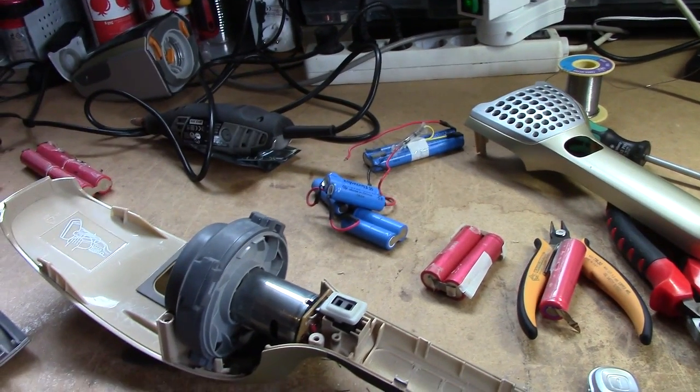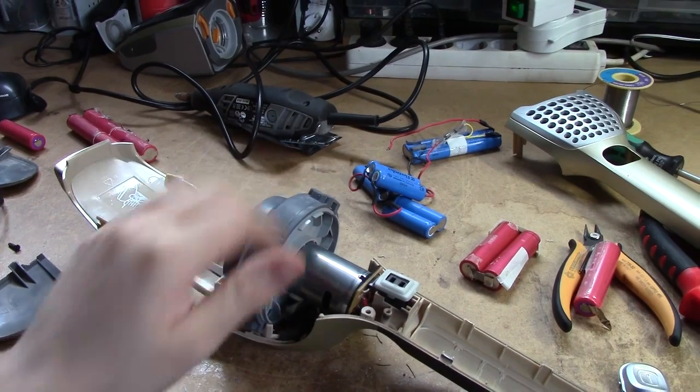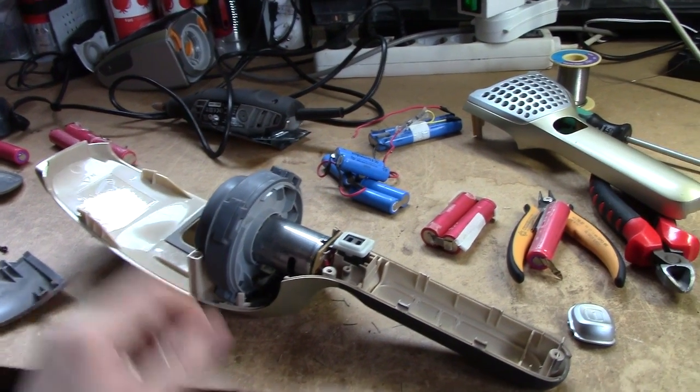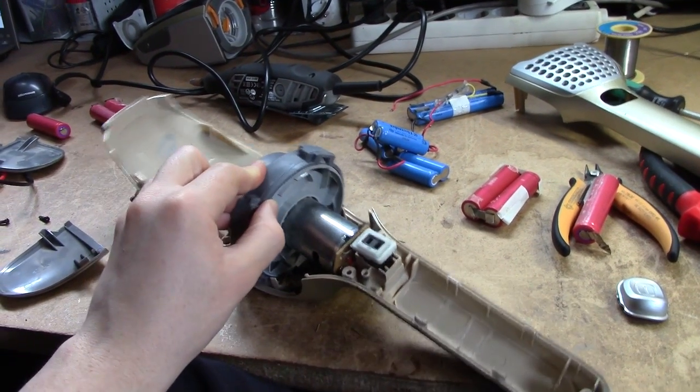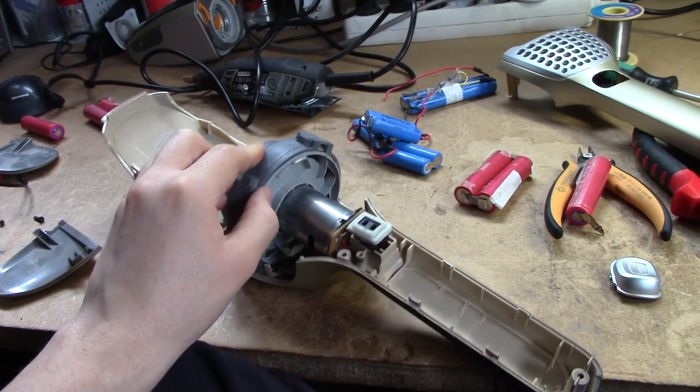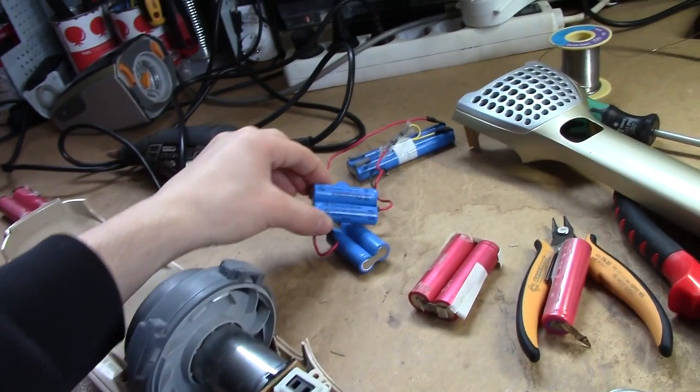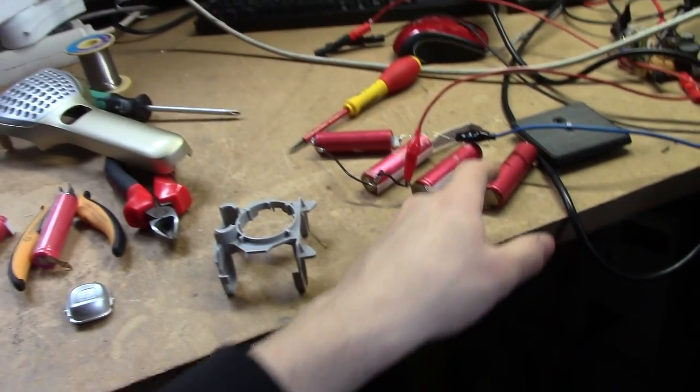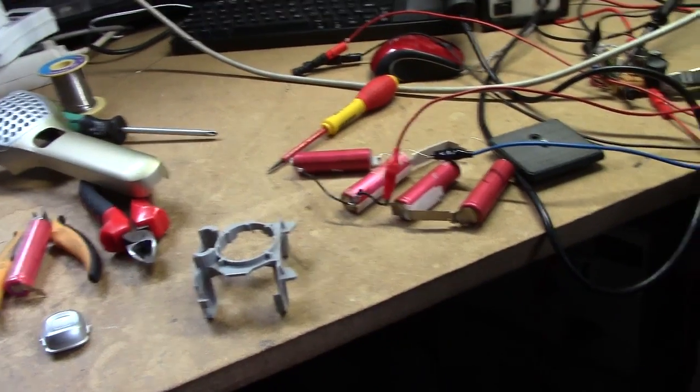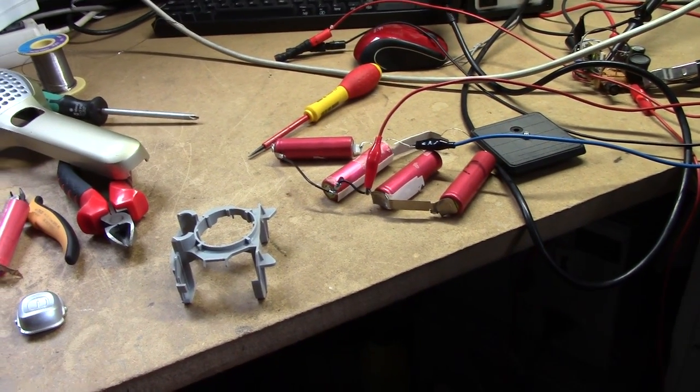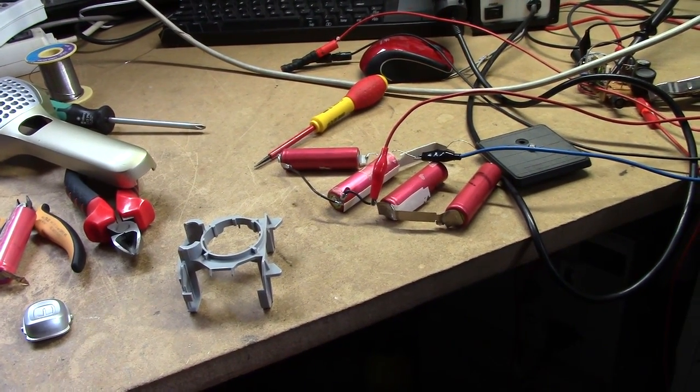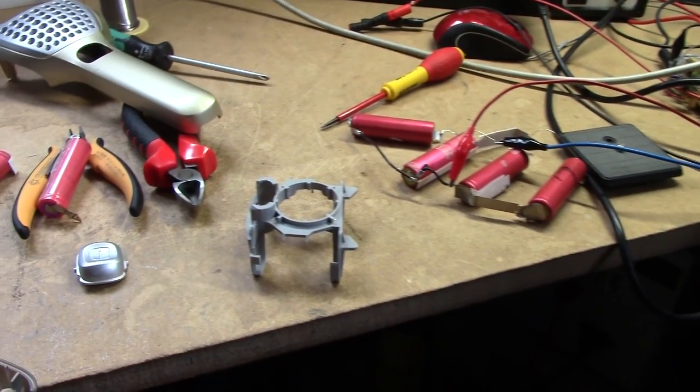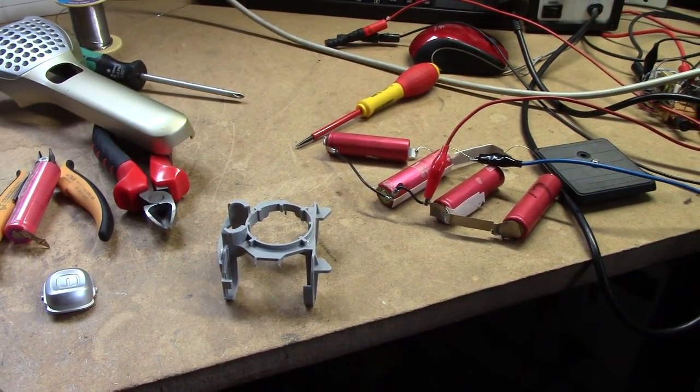These 1.3 amp-hour nickel metal hydrides probably didn't have too much to give at the giant current levels this thing wants to consume. This motor, when I tried with the lab power supply, wanted more than 4 amps, probably discharging at like 5 or 6C with these. And yeah, these are probably not going to be too happy about the high discharge level, but who gives a toss if it catches fire, it catches fire. I'll just toss it to each side.